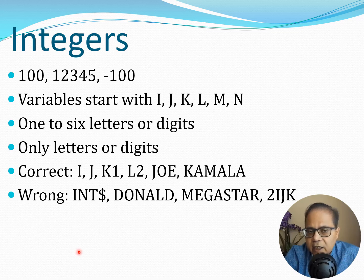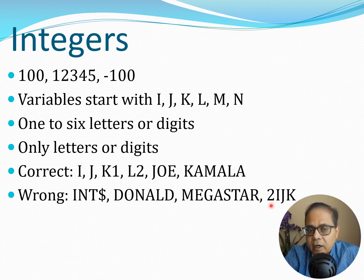Some correct integer variable names would be I, J, K1, L2, Joe, Kamala. Wrong names would be int$ — because it uses a special character; Donald — because it starts with D, not I through N; mega_star — because it's more than six characters in length; and 2IJK — because it starts with a digit rather than a letter.